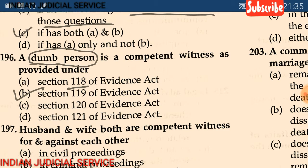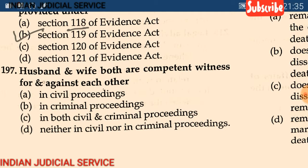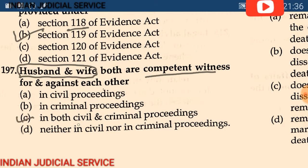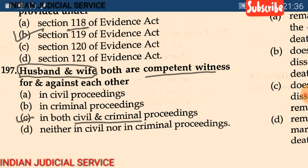Question 197: Husband and wife — both are competent witnesses for and against each other — (A) in civil proceedings, (B) in criminal proceedings, (C) in both civil and criminal proceedings, (D) neither in civil nor criminal proceedings. The answer is option C: both civil and criminal proceedings. This provision is provided under section 120 of the Evidence Act.